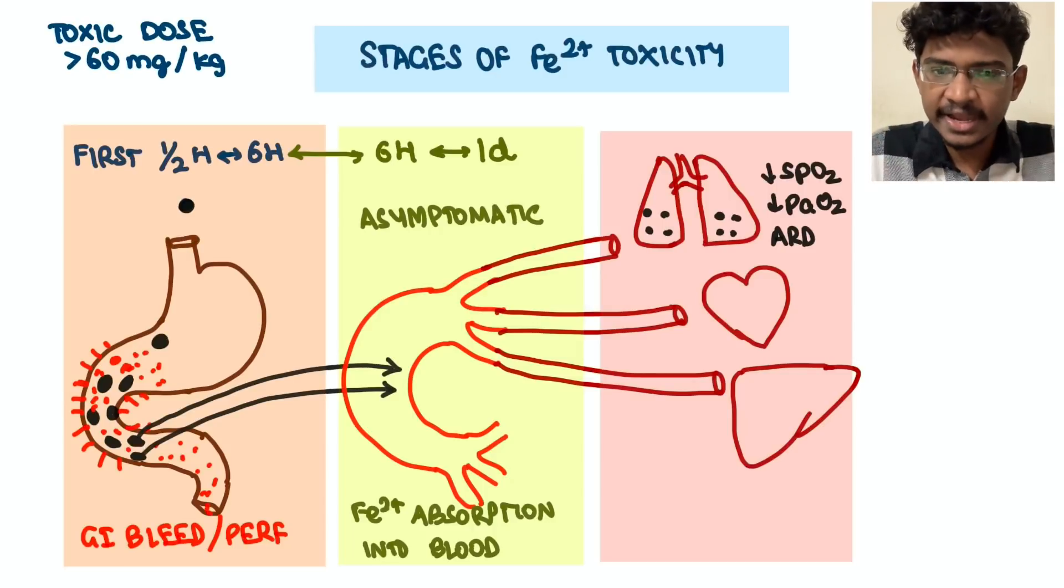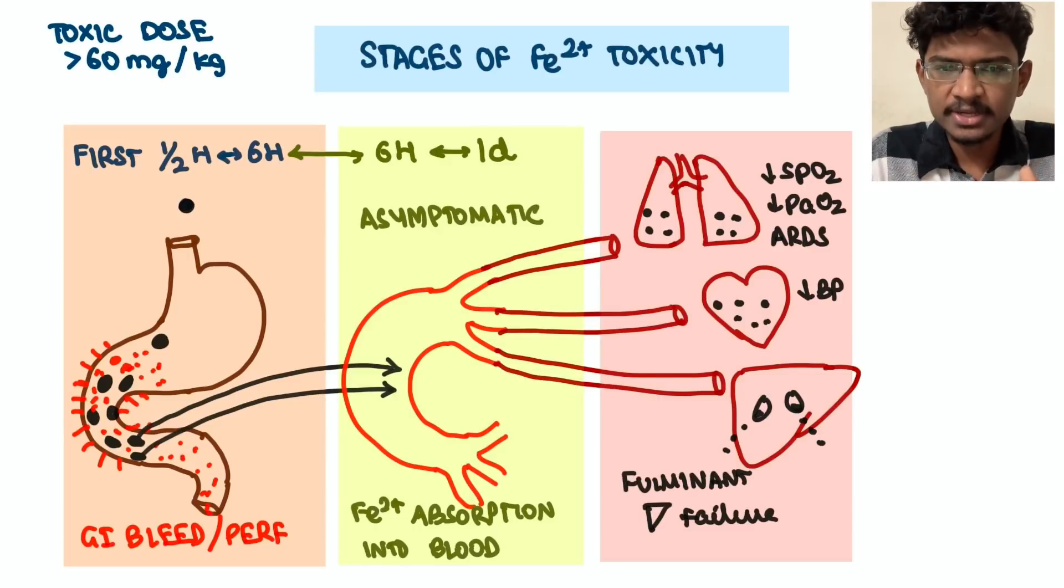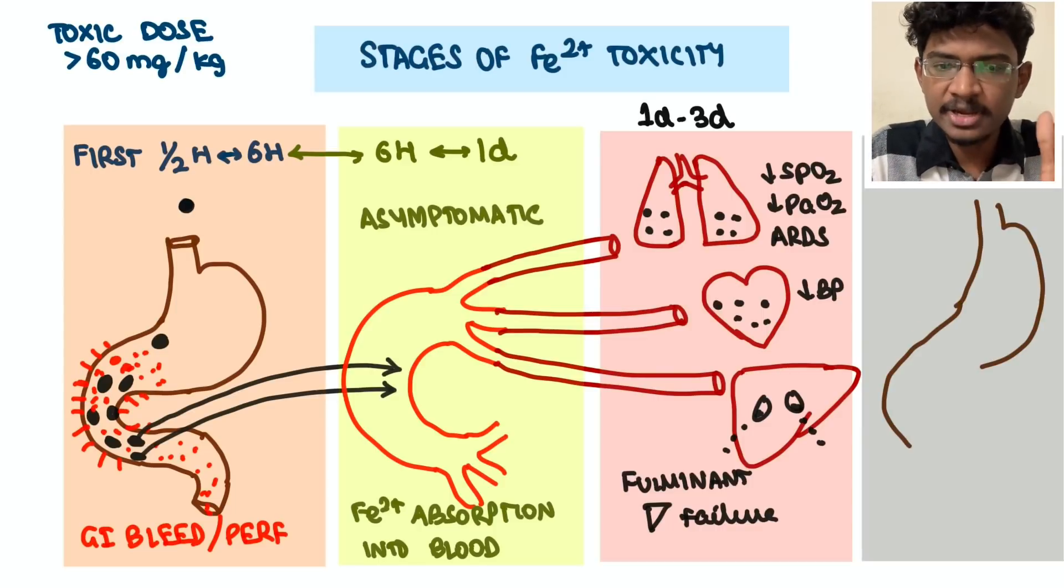This will also enhance the respiratory rate. Next is direct suppression of the myocardial contractility by these iron atoms. That will decrease the cardiac output, decrease the BP leading to cardiogenic shock. Actually this is the most common cause of death in iron toxicity. Next is it can also invade the liver, so much of iron is deposited in the liver causing acute fulminant hepatic failure. It will result in hypoglycemia and decreased synthetic functions of the liver - coagulopathy, encephalopathy, all these things.